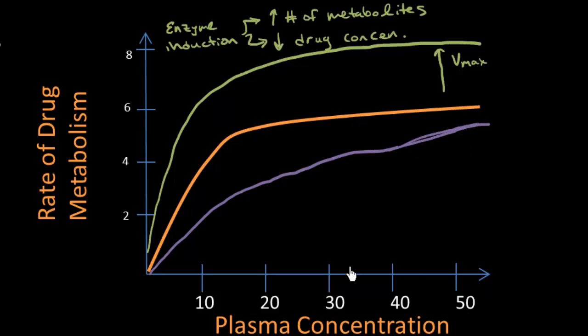And at this certain point, once the plasma concentration of the drug being metabolized, that primary drug, once that really goes up, these kind of equal out. So the orange is the control, the purple is that same drug in the presence of a competitive inhibitor.